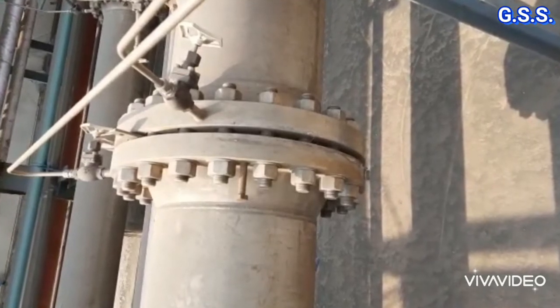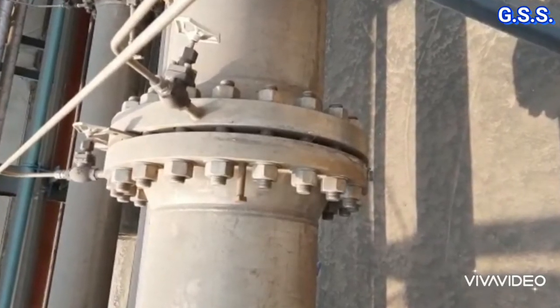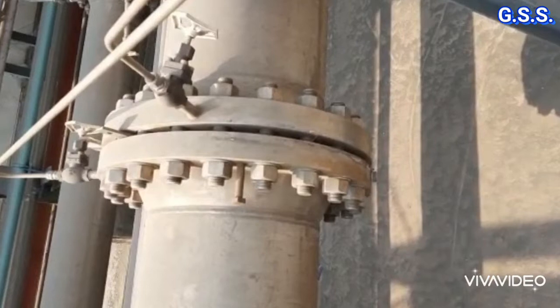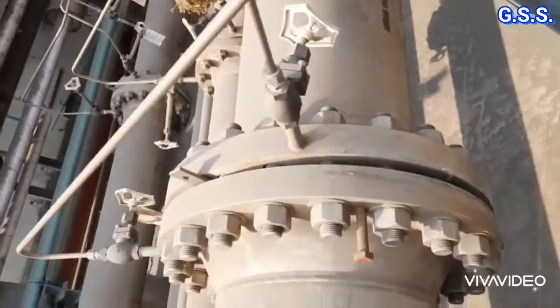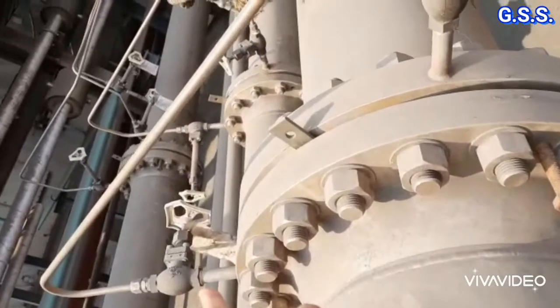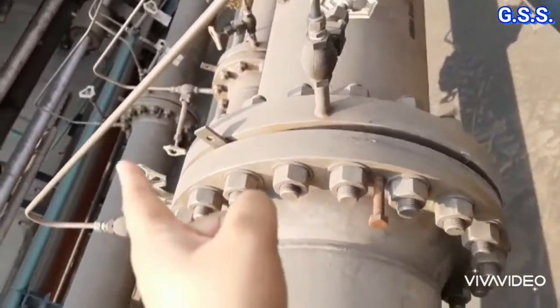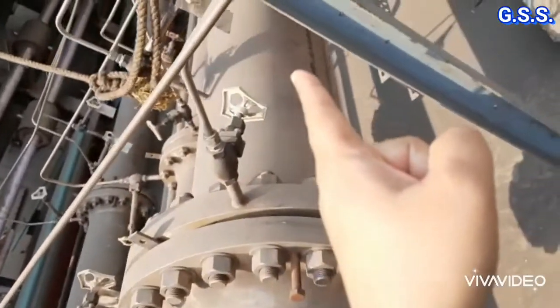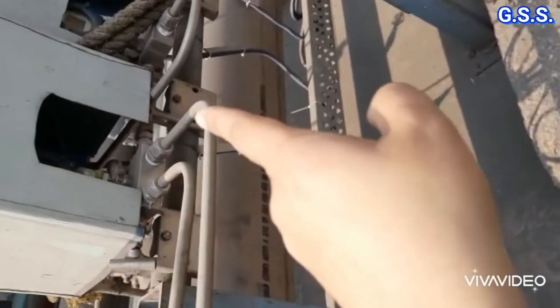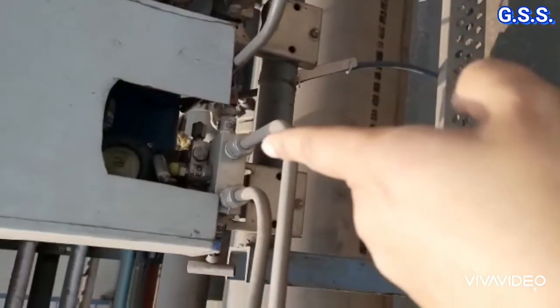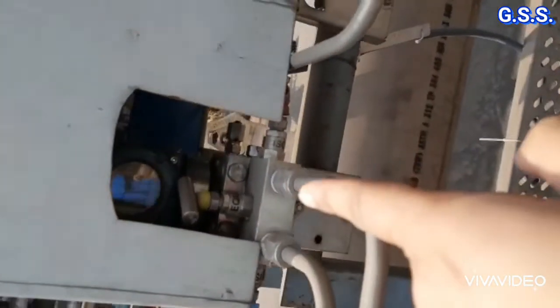This is an installation of an orifice between two orifice flanges. Two half-inch tappings with root valves are provided on the orifice flange across the orifice. From the root valve, tubing goes to the transmitter, which measures the flow based on differential pressure across the orifice.